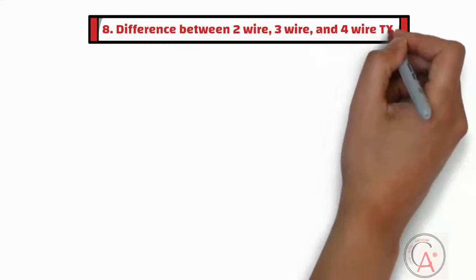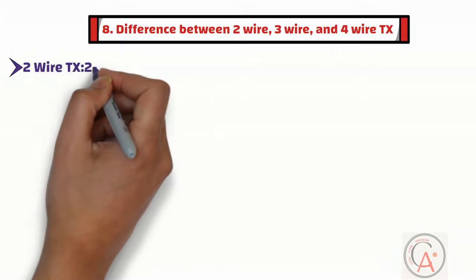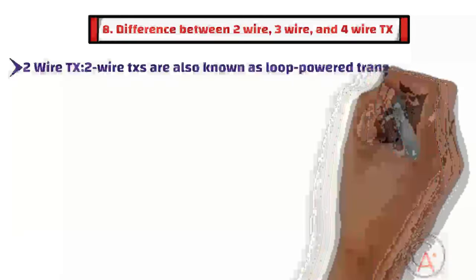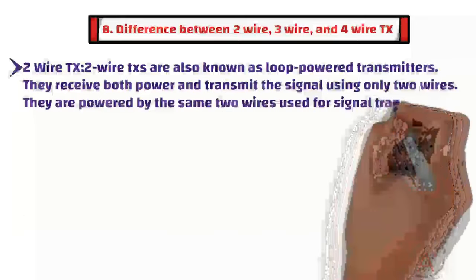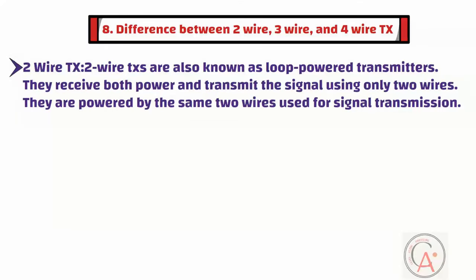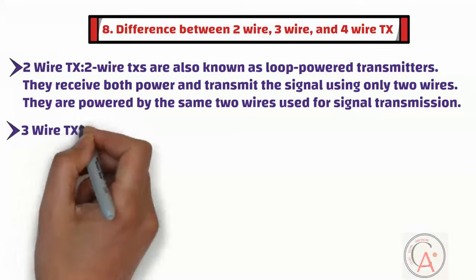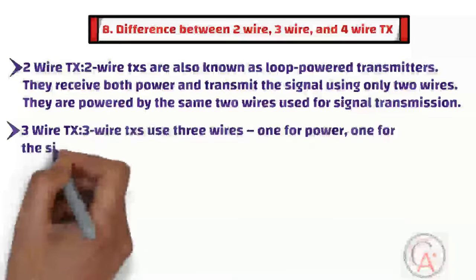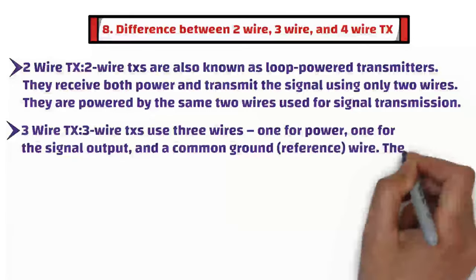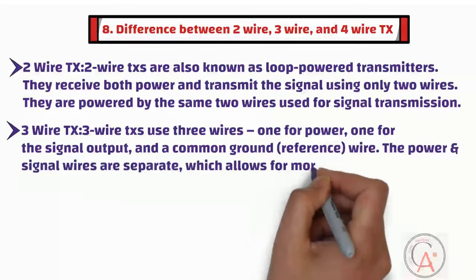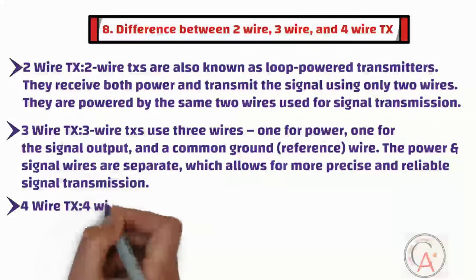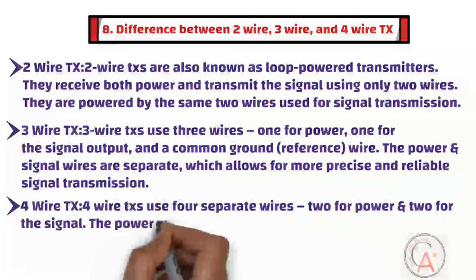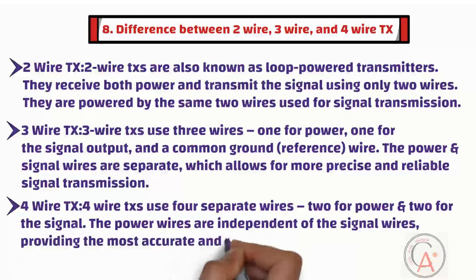The eighth question is: what is the difference between two-wire, three-wire, and four-wire transmitters? Two-wire transmitters, also known as loop-powered transmitters, receive both power and transmit the signal using only two wires. Three-wire transmitters use three wires — one for power, one for the signal output, and a common ground or reference wire, allowing for more precise and reliable signal transmission. Four-wire transmitters use four separate wires — two for power and two for the signal — providing the most accurate and reliable measurements.